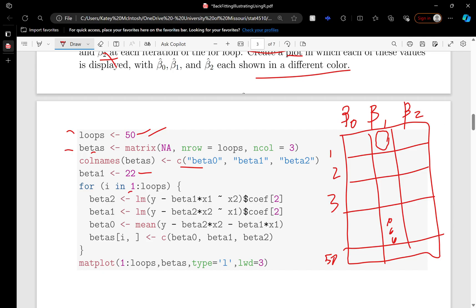Now we start the loops. Loop 1: we use beta 1 to estimate beta 2, so we get this coefficient. Then we use beta 2 to estimate beta 1. Then we use both of those to estimate beta 0.